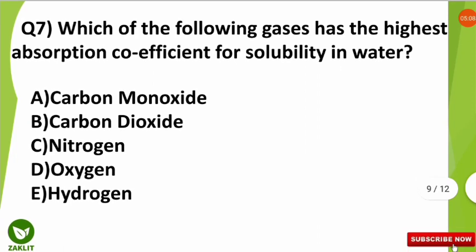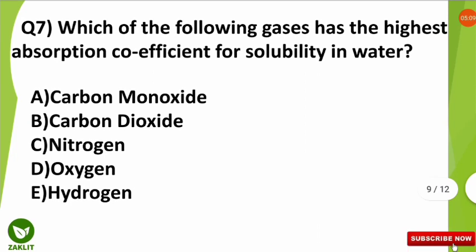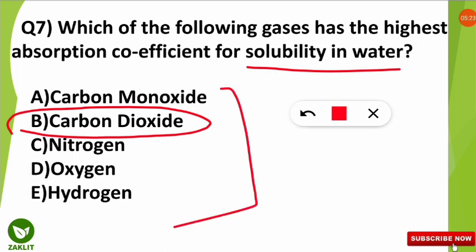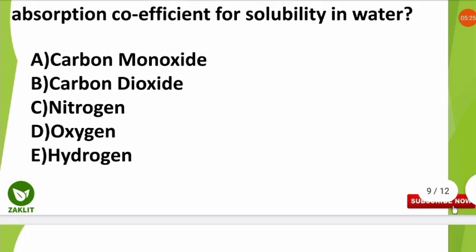The next question was: which of the following gases has the highest absorption coefficient for solubility in water? The correct option is B — carbon dioxide has the highest coefficient of solubility absorption as compared to all the other gases listed.